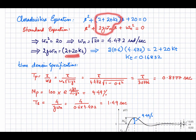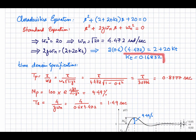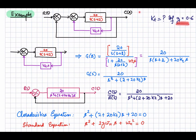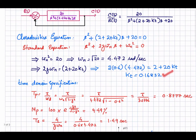This part, 2ζωn, will be equal to 2 + 20kt. We have calculated ωn, and zeta is given as 0.6. So 2 × 0.6 × 4.472 must equal 2 + 20kt. From this equation we find kt = 0.16832. If we keep this constant equal to 0.16832, the damping factor will be 0.6 for the complete closed loop system.